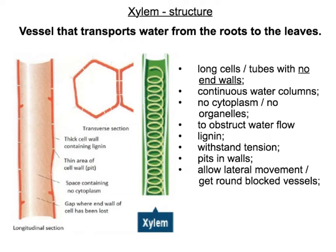Those cells would need water and that can escape through the pits, but the bulk of the water goes up towards the leaves so that photosynthesis can take place. There's also a spiral arrangement of lignin around the outside of the tube. This can withstand the tension — when water is drawn up the xylem, it creates tension that wants to collapse the xylem, so lignin strengthens the walls of the xylem to prevent it from collapsing.